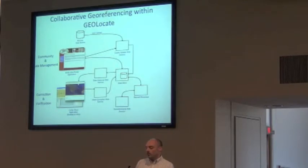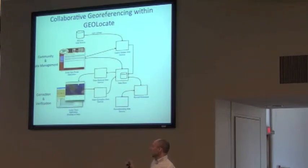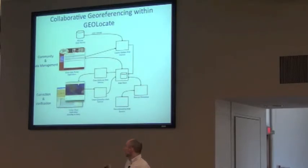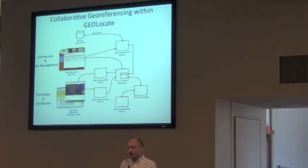The way collaborative georeferencing works: there is a data management portal where someone can log in, get a user account, upload data, create communities, set different options for georeferencing, and manage users. Using one of the clients — you can still use the desktop client, although we'll probably be deprecating that feature soon, because the web-based client now exceeds all the functionalities of the desktop client — you log in through a website and start verifying your results of automated georeferencing. When the data get uploaded to the portal, they're already georeferenced beforehand, and then end users go through the process of retrieving records and verifying the results.